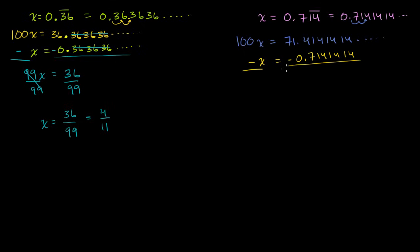So let's subtract. 100x minus x is 99x. The 1414's cancel with those 1414's. And we have 71.4 minus 0.7. We can do this in our head or we can borrow. This could be a 14, this is a 0. So you have 14 minus 7 is 7. And then 70 minus 0. So 99x is equal to 70.7.